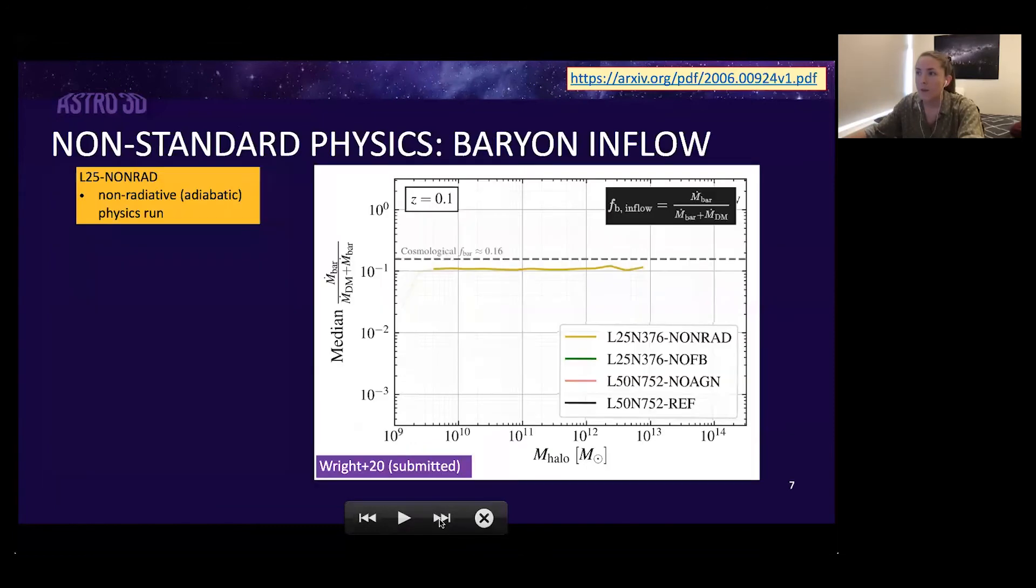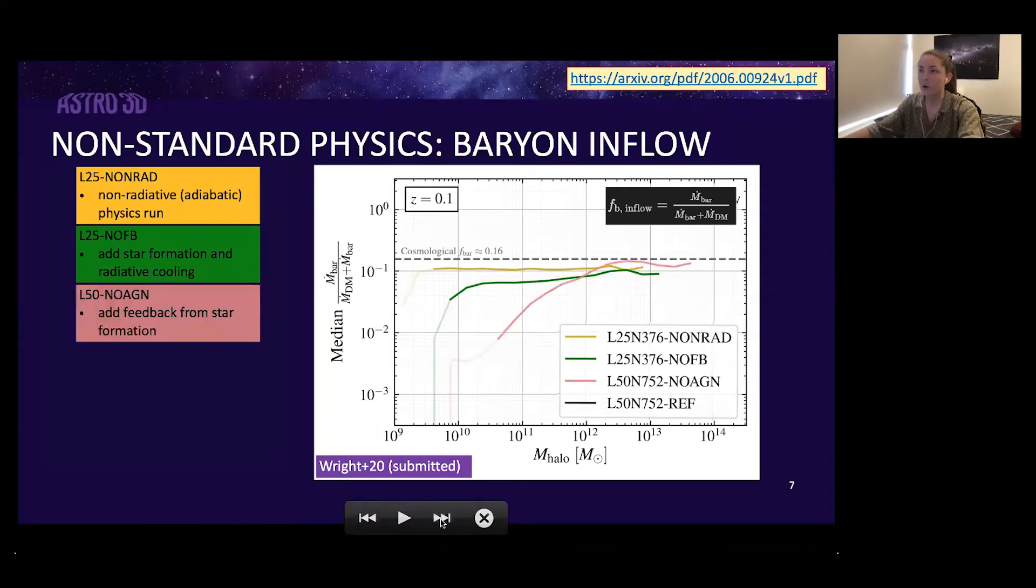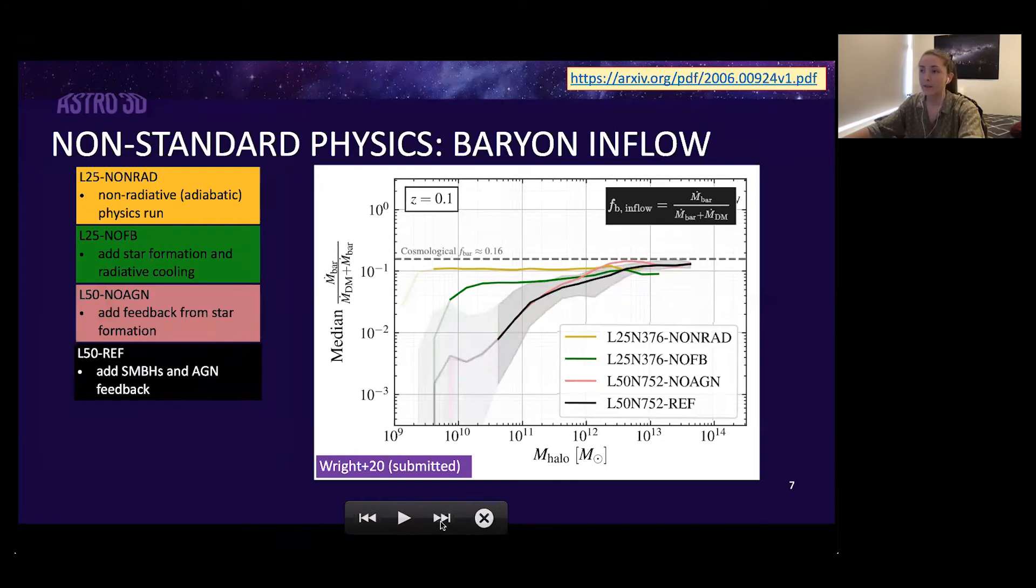I'm now going to move on and illustrate the influence of subgrid physics on the results that I've just shown you. We're going to start with a very basic adiabatic physics run and work our way back up to what we saw with reference physics regarding inflow baryon fractions. Starting with the non-radiative run in yellow, this run has baryons and dark matter but it has no radiative cooling or star formation. The no feedback run in green adds radiative cooling and star formation.